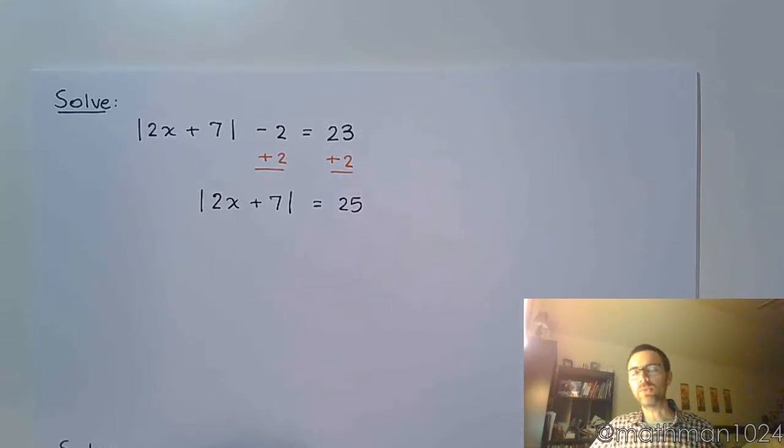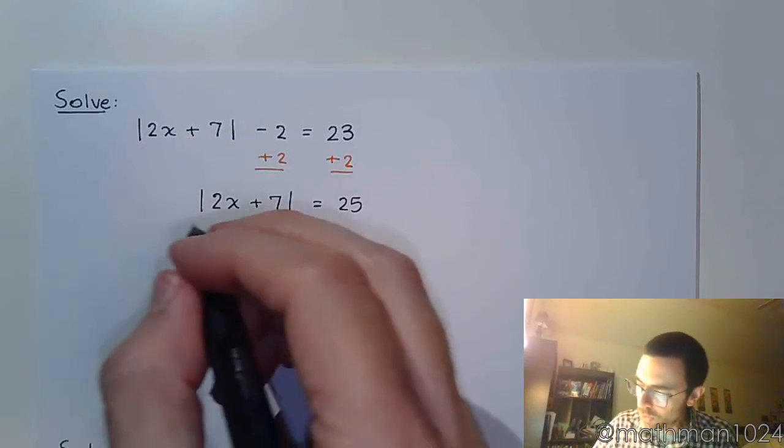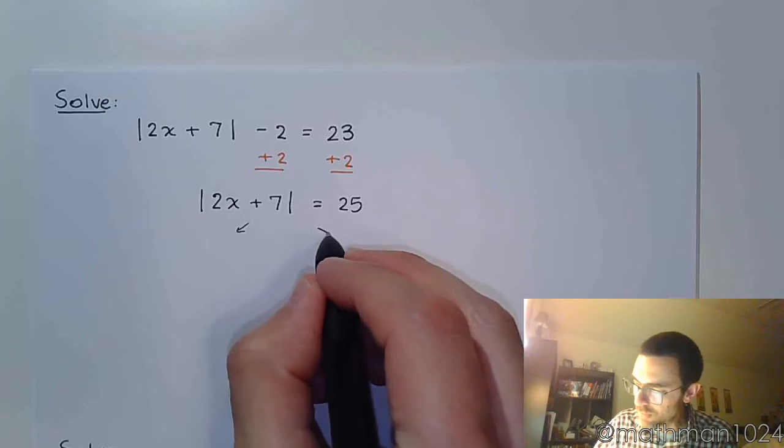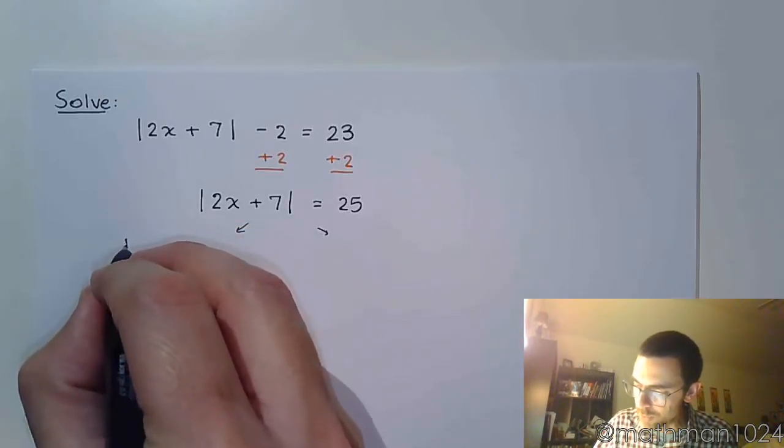And as long as the absolute value is by itself, we can now split this up into our two equations. I hope that you are doing these problems the same way that I'm doing them. The absolute value is still here, and it's only when I split it up into the two different possibilities do I drop the absolute values.